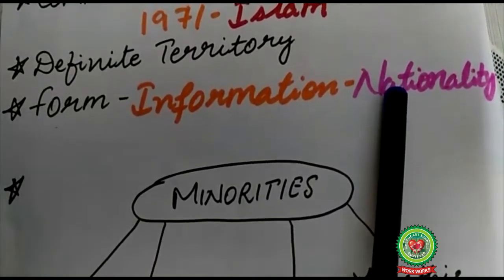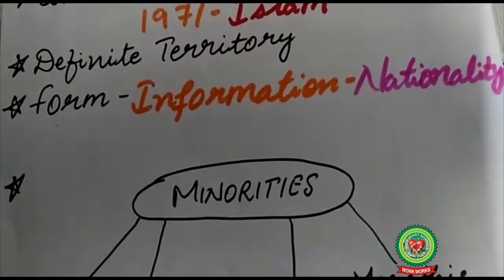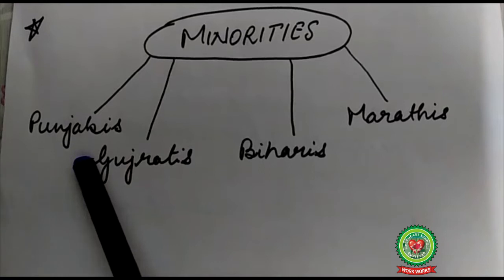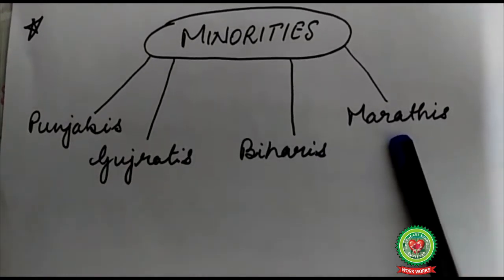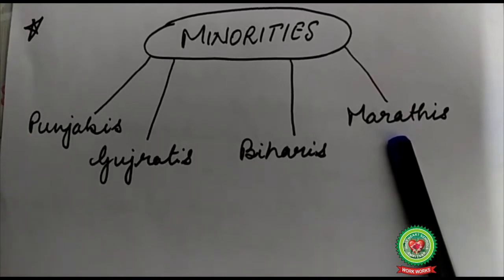In political science, several minorities living in the territory of a state are also often called nationalities. For example, minorities like Punjabis, Gujaratis, Biharis, and Marathis are also called different nationalities of India. They are small in number and scattered within the nation. Minorities are loosely identified as nationalities.